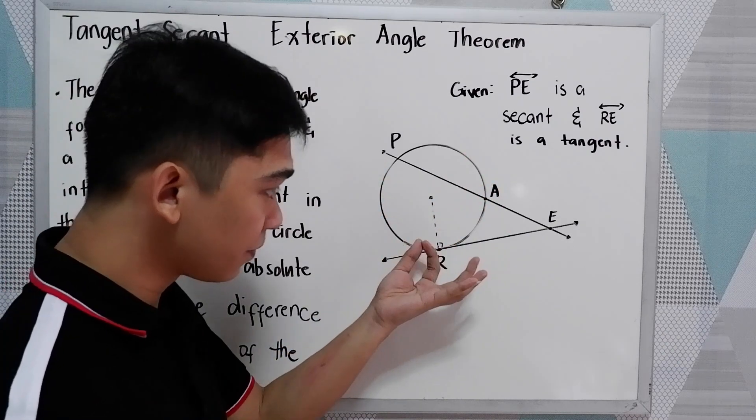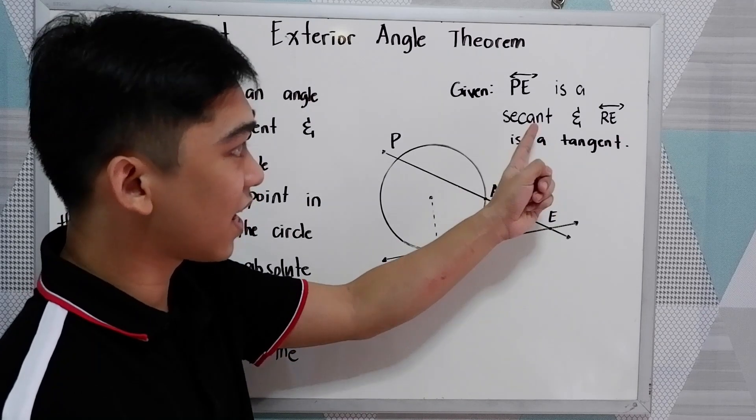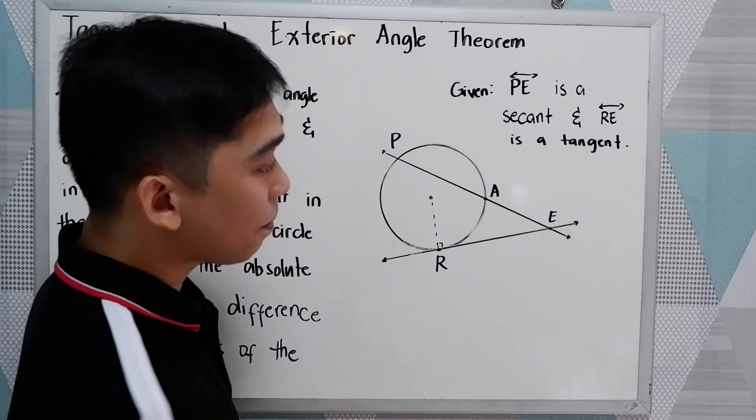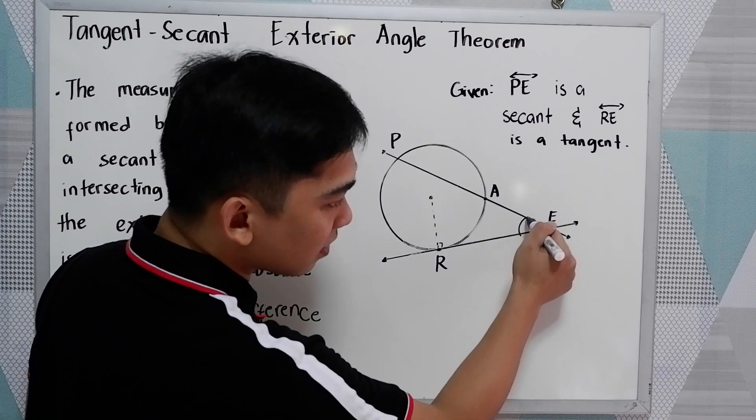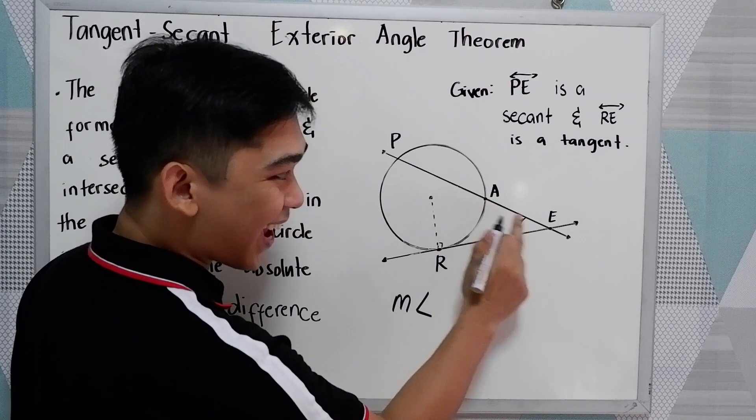So we have a circle and PE, PE is a secant and RE is a tangent. So the measure of the exterior angle, let's say measure of angle AER.